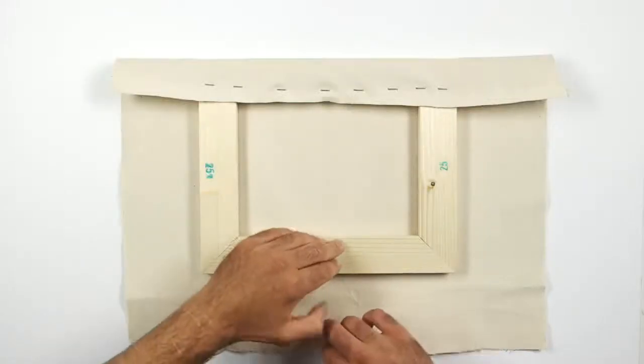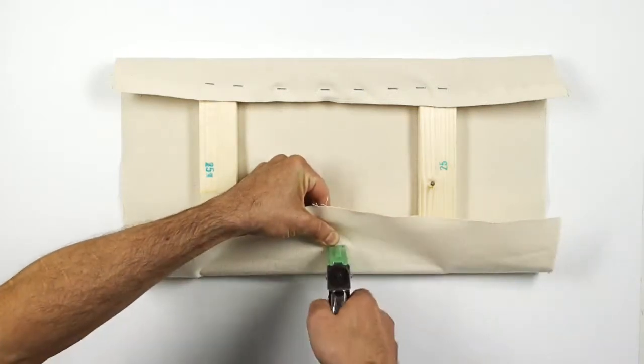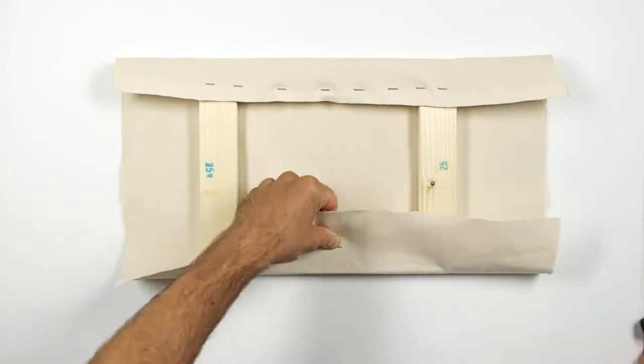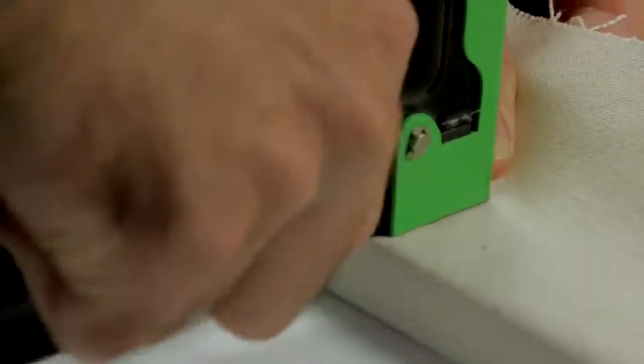Go to the opposite side, stretching as tight as you can with your thumb and fingers. Now staple the center first and then work your way out. On larger canvases, you will need canvas pliers to help make the stretching easier.